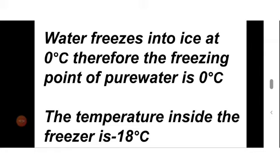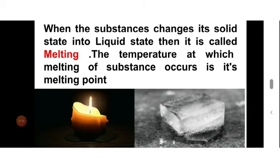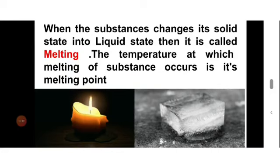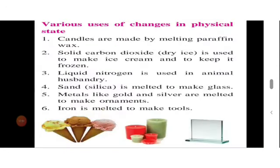Now let's learn about melting. When ice gets heat, it starts melting or changing into a liquid state. Ice melts at zero degrees Celsius. This means that the freezing point and melting point of water are one and the same. Each substance has a specific boiling point, which is also its condensation point. Each substance has a specific melting point, which is the same as its freezing point.